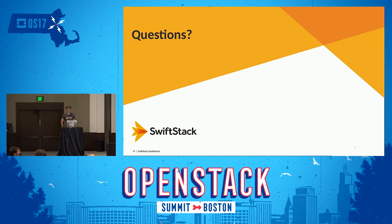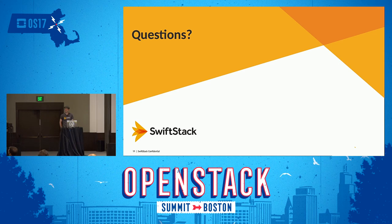Audience question: You talked about some of the caveats and compromises. During bimodal access — when you're using both the Swift API and the S3 API — do you have any idea how common that is? I've heard a lot of times the reason you want S3 support is because an application only knows how to talk to S3, so you use Swift 3 for that app and then everyone else uses their own accounts with the Swift API. Do a lot of people go back and forth?